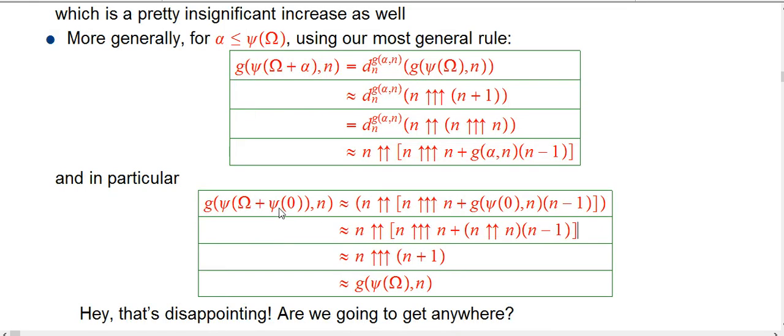So in particular, we're going to look at what happens if you put in psi of 0 in that. Because remember, psi of 0 is epsilon naught. That is no mean thing in terms of what it can do. It's a pretty decent ordinal. So what is it going to be? We're just going to plug it into this previous thing here. So n double up, n triple up n, that's the part that's coming just the fact that we had psi of omega to start with. And then we're going to add in g of psi of 0 comma n times n minus 1. That is n double up n. It doesn't quite cut it. n triple up n is much bigger, almost always, than n double up n, even times n minus 1. And so, to a very good approximation by our standards, it's really just still n triple up n plus 1, which is exactly what we started with.